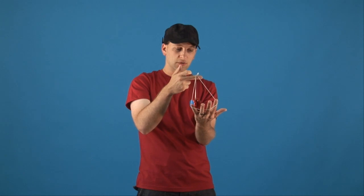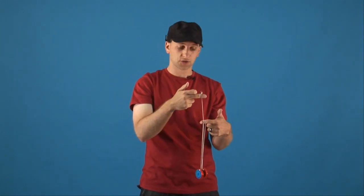To dismount, you're actually going to throw the yo-yo forward and at the same time you're going to pull the rest of your fingers out of the string so that you can get into your dismount.